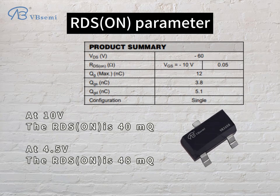RDS on parameter: at 10V, RDS on is 40 mΩ. At 4.5V, RDS on is 48 mΩ.